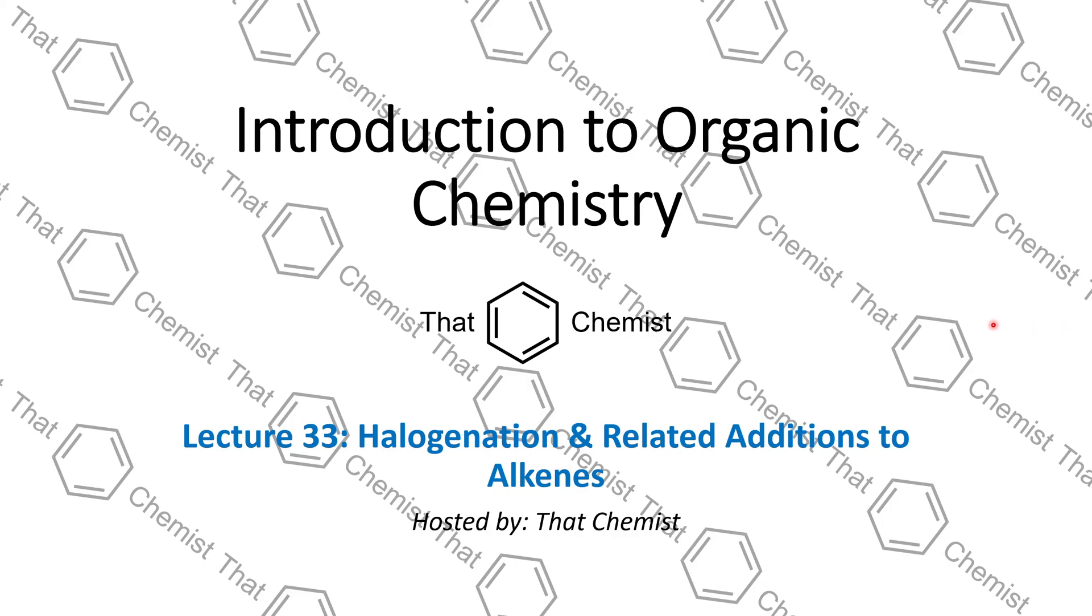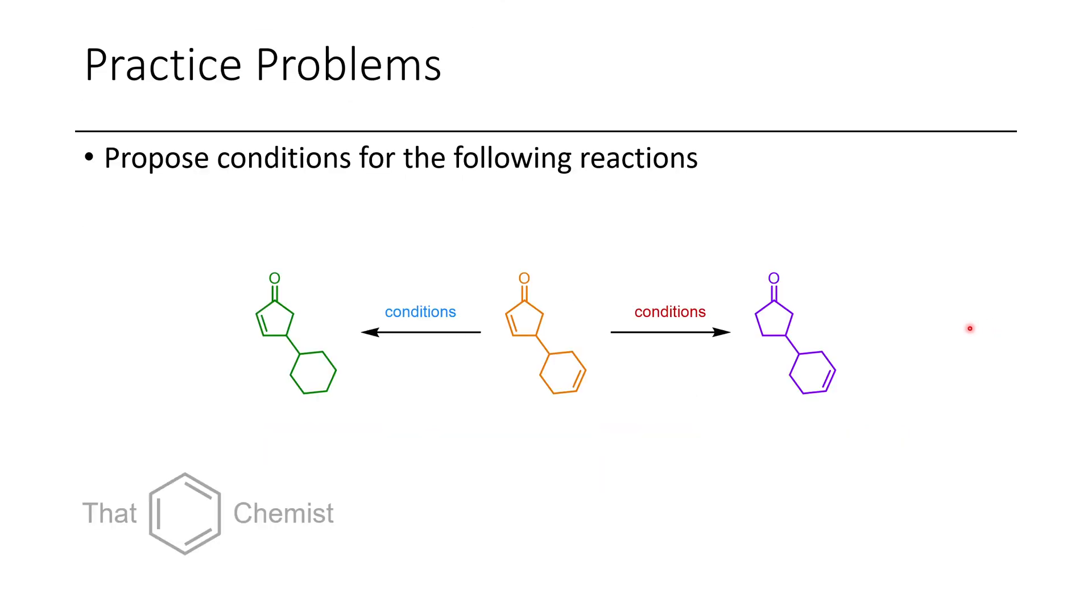Welcome back to another episode of Introductory Organic Chemistry. Today we're going to talk about halogenation and related additions to alkenes. But before we get into that, let's go through the practice problems I assigned last lecture.